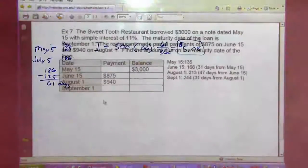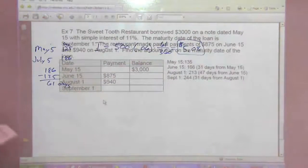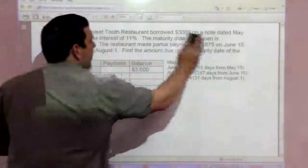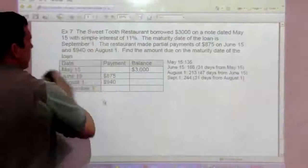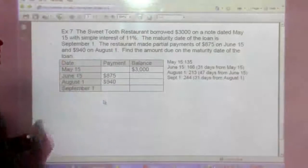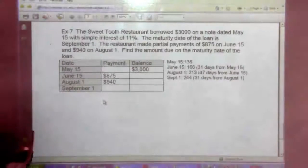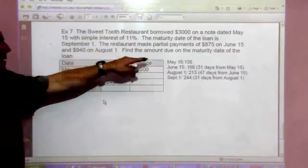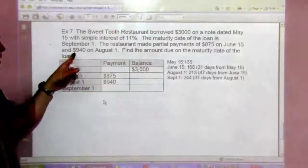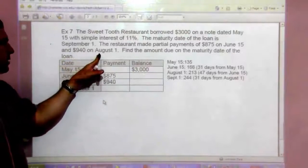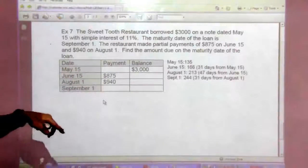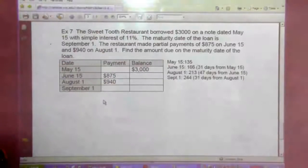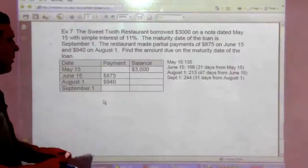Let's scroll down here to the last problem of this section, Example 7. The Sweet Tooth restaurant borrowed $3,000 on a note dated May 15th with simple interest of 11%. The maturity date of the loan is September 1st. The restaurant made partial payments of $875 on June 15th and $940 on August 1st. Find the amount due on the maturity date of the loan.